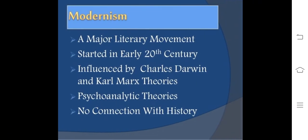As far as literary history is concerned, we can say that Modernism was a major literary movement. It started in early 20th century, influenced by Charles Darwin and Karl Marx's theories, psychoanalytical theories, with no connection to history.